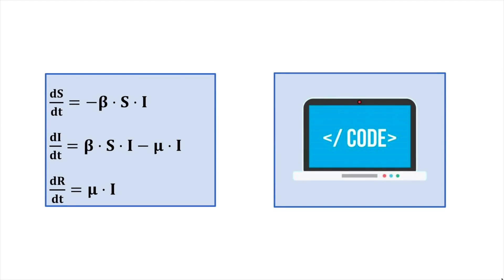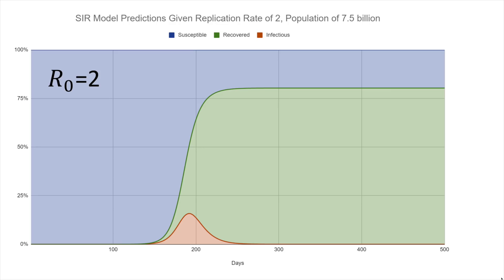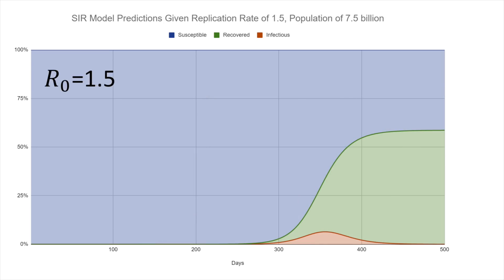Given this model, we can use math and computer simulations to get predictions of how an epidemic might progress. Of course, the predictions are only as good as the model, and the model we're using here makes a number of simplifying assumptions. Using a reproductive number of 2, the SIR model predicts a catastrophic blow-up in the number of cases around day 190, when nearly 16% of the world's population is infectious simultaneously — vastly more than the medical system could possibly cope with. The virus will only die off once about 80% of the population has had it. Using instead a reproductive rate of 1.5, there will still be a substantial blow-up from around day 350, but the virus will die off once about 59% of the population has had it.